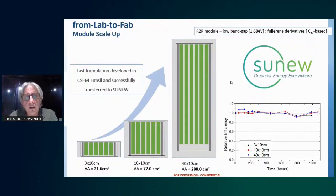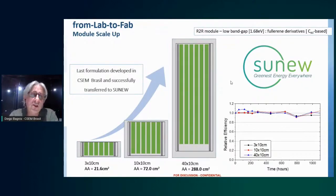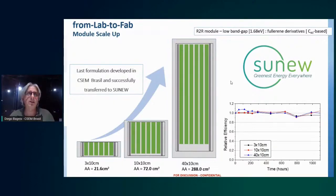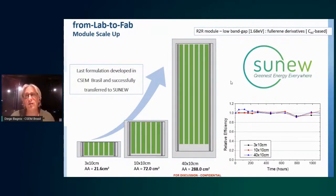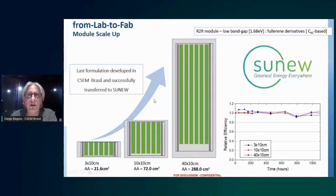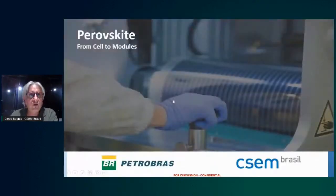As panel dimensions increase, the barrier at the border becomes relatively more important. When increasing panel size, the same border thickness means less relative protection, so humidity penetration from the sides is expected to increase. I'll explain this slightly better with a graph later.